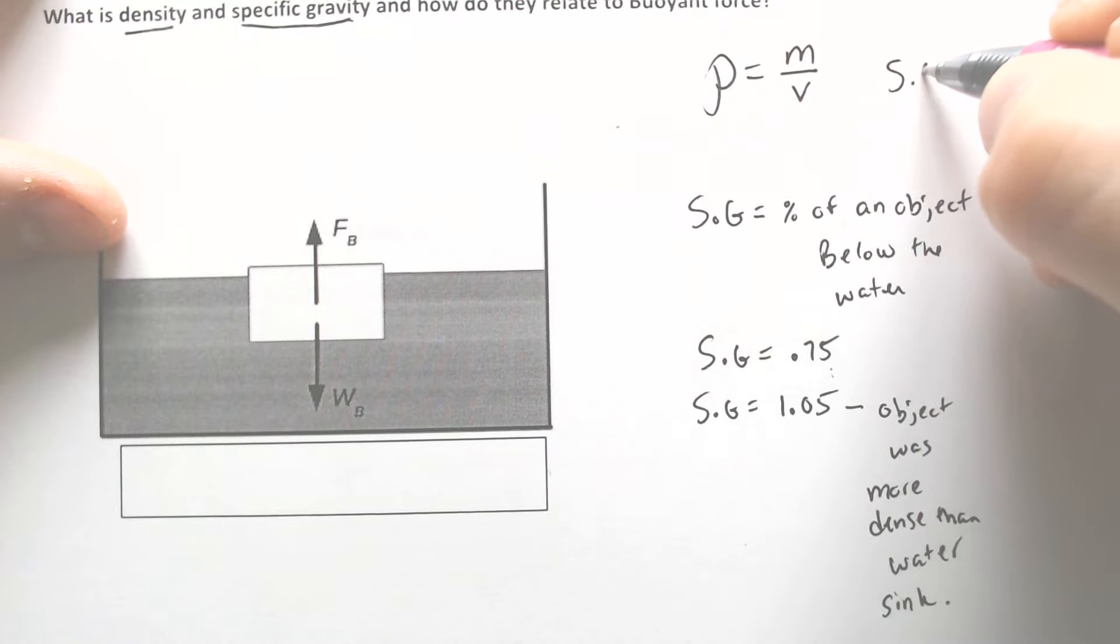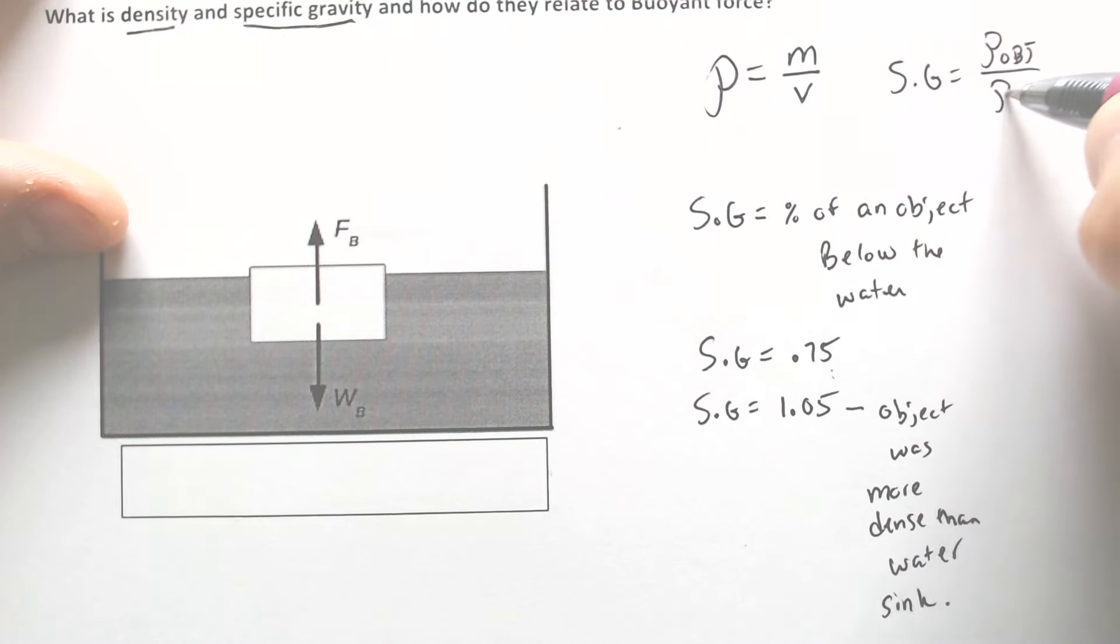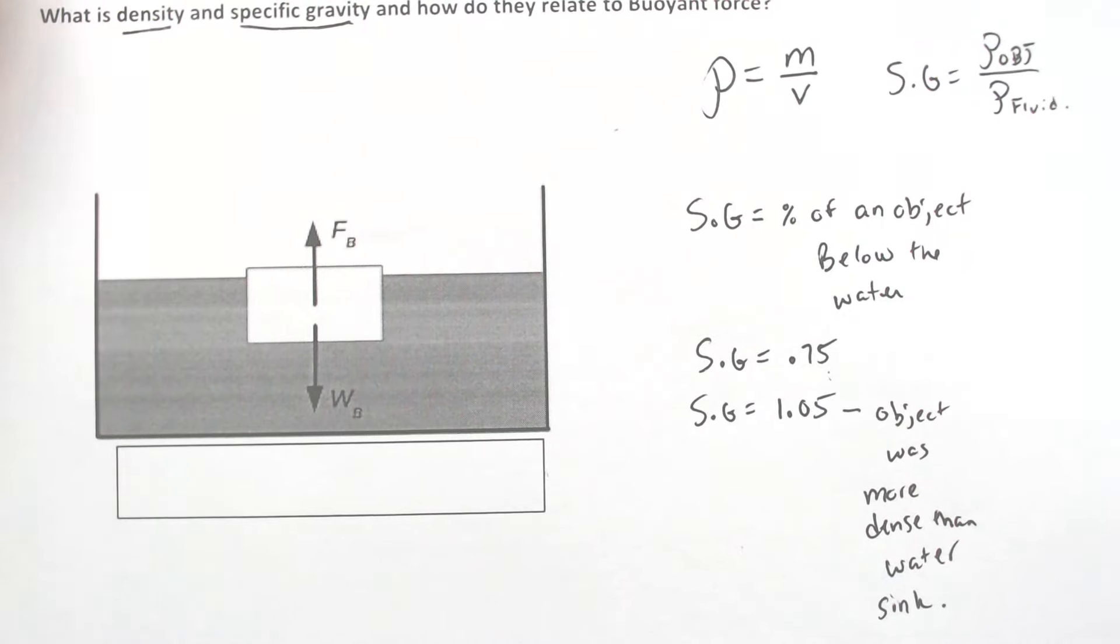There is a formula for specific gravity. Specific gravity is essentially equal to the density of the object divided by the density of the fluid. And that will typically be water in most situations.